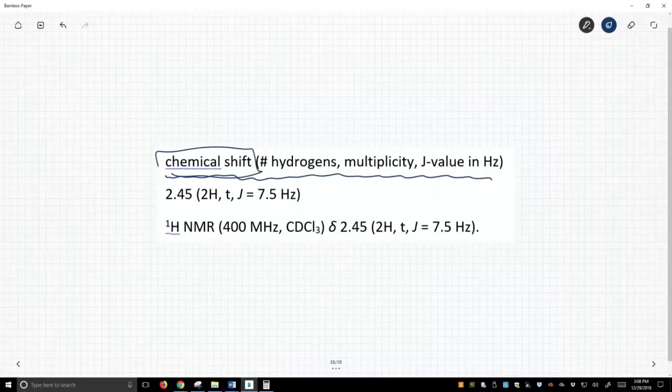We report the chemical shift. That's a value that's in ppm. That's our x-axis value for our peak. And then in parentheses, we say how many hydrogens do we have? Then a comma. What's the multiplicity? And then lastly, the J value in Hertz, if it has a J value. So if something is a singlet, there is no J value.